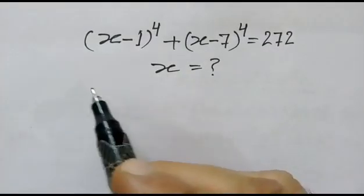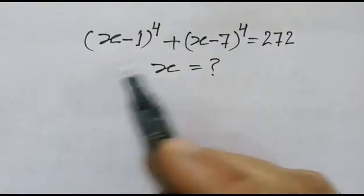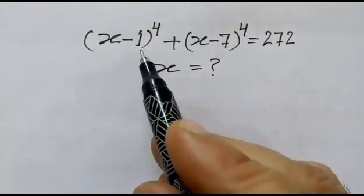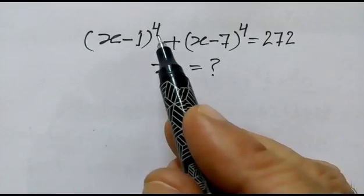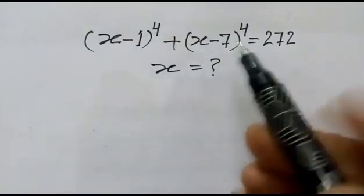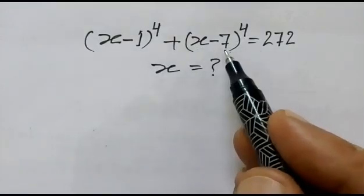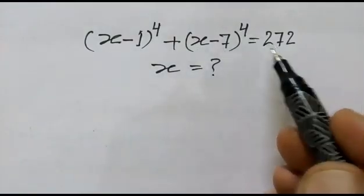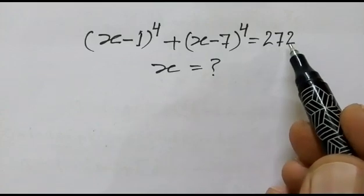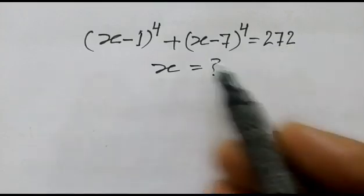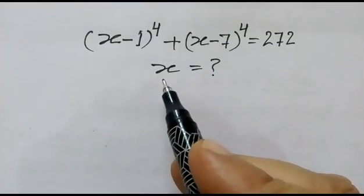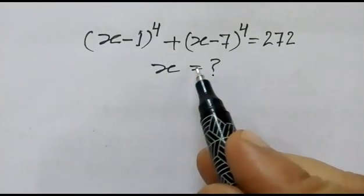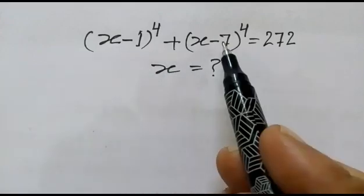We have been given an equation: (x minus 1) whole power 4 plus (y minus 7) whole power 4 is equal to 272. We have to find the value of x, i.e., we have to solve this equation.